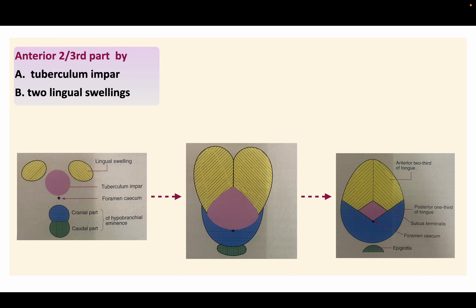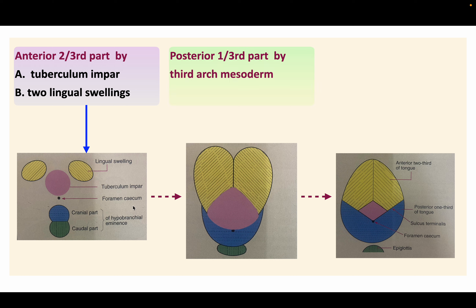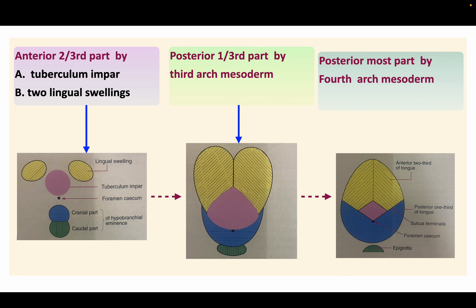The anterior two-thirds of the tongue is derived from the tuberculum impar and the two lingual swellings. The posterior one-third is derived from the third arch mesoderm, and the posterior-most part is from the fourth arch mesoderm.